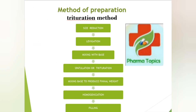The preparation steps are: first, size reduction; second, levigation; then mixing with the base. Mix the ingredients on the slab using spatula by trituration until a homogeneous product is formed. Then fill the product into a suitable jar or container. This is the method of preparation by trituration method.